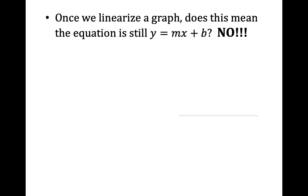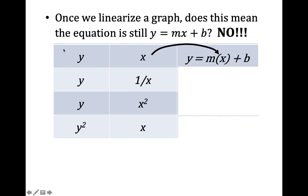Once we linearize a graph it's not still y equals mx plus b. No, you can't use your original y physics variable and your original x physics variable. So this first one, if we graphed y and x which is normal we get y equals mx plus b. And remember, y stands for some physics variable that's going to be on your vertical axis and x stands for some physics variable that's going to be on your horizontal axis.